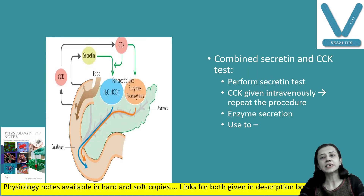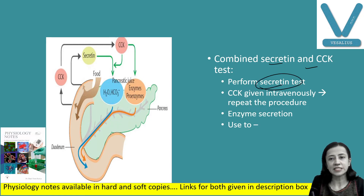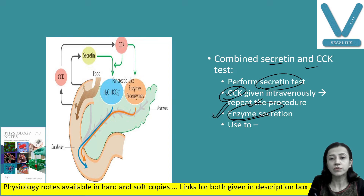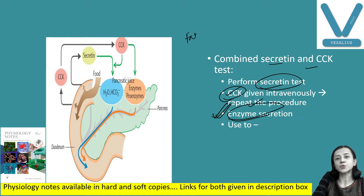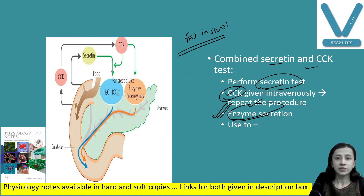The second test is the combined secretin and CCK test. First the secretin test is performed, and then cholecystokinin is given intravenously and the same procedure is repeated. Since CCK increases enzyme secretion, the pancreatic juice obtained is rich in enzymes. This test is useful to evaluate cases of steatorrhea — fat in the stool — where fat is not being absorbed.